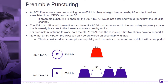Keep in mind that for preamble puncturing to work, both the AP and client must support it, so legacy clients cannot take advantage of this. It's also important to note that when using 80 MHz or 160 MHz channels, you can only puncture secondary channels — you cannot puncture your primary channel, which is a required portion. This capability of preamble puncturing is an optional capability within 11ax, and we just don't know how well this will work or whether it will even be present in some chipsets and vendor APs.